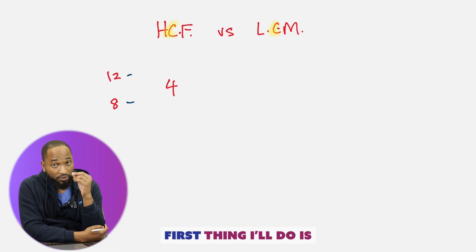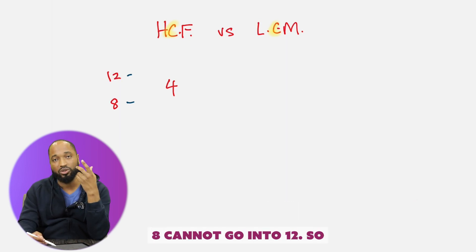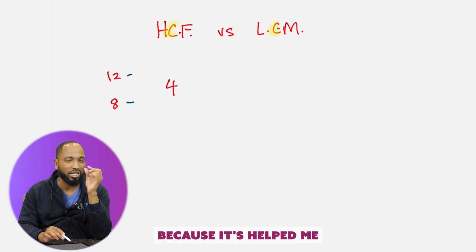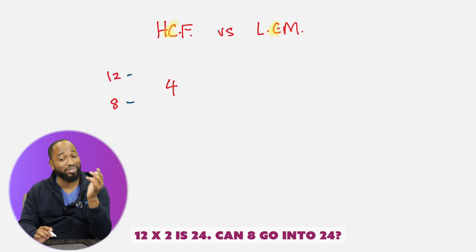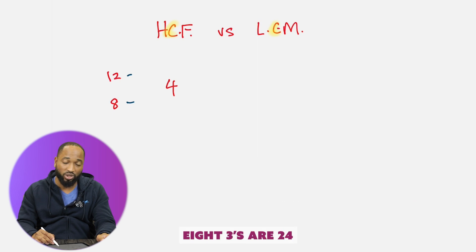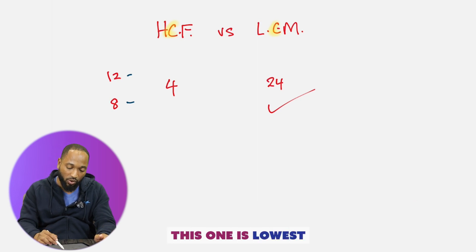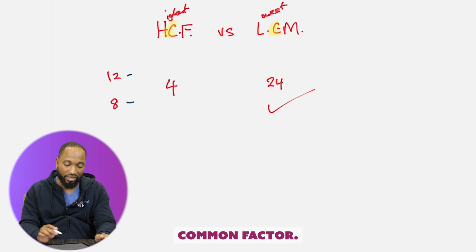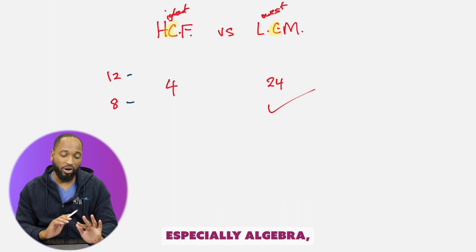So what about the LCM of 12 and 8? The first thing I do is look at the highest number, because the LCM could sometimes be one of the numbers themselves — but it isn't here because 8 cannot go into 12. So I use the biggest number. I like to use the biggest number for both HCF and LCM because it helps me narrow down to the lowest common multiple really fast. 12 times 2 is 24 — can 8 go into 24? It most certainly can: 3 times 8 is 24. So 24 is the LCM, the lowest common multiple. Notice: for multiples we want the lowest common multiple, and for factors we want the highest common factor.